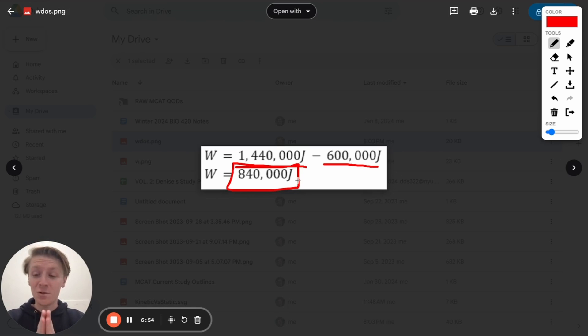But one last thing we need to remember, this work is being done in the opposite direction that the train's moving. And so because that work is being done to slow down the train, that's going to be negative. The work being done here is a negative value. It's pushing the train in the backwards direction. So that work is going to be negative 840,000 joules.